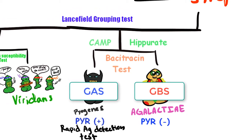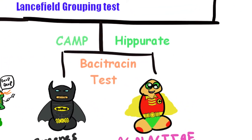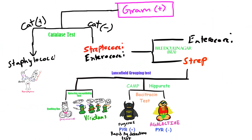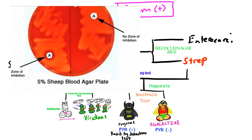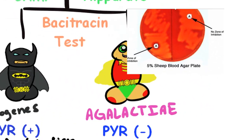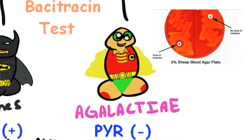We can also use the Bacitracin susceptibility test, which is a fast way to detect GAS, aka strep pyogenes. Bacitracin is a really strong bactericidal drug that's too toxic for systemic use, but we can use it superficially on the skin. It can differentiate GBS, aka Streptococcus agalactiae, from GAS, aka Streptococcus pyogenes.